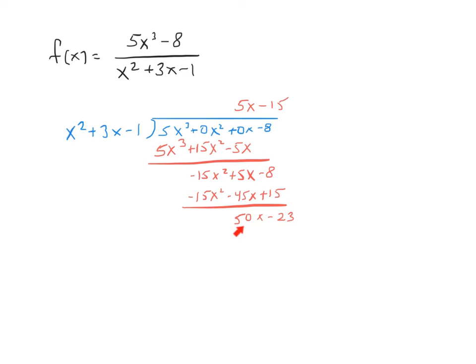Now this is our remainder, which again doesn't matter to us. Our oblique asymptote is going to be y equals just the quotient. So we get y equals 5x minus 15.